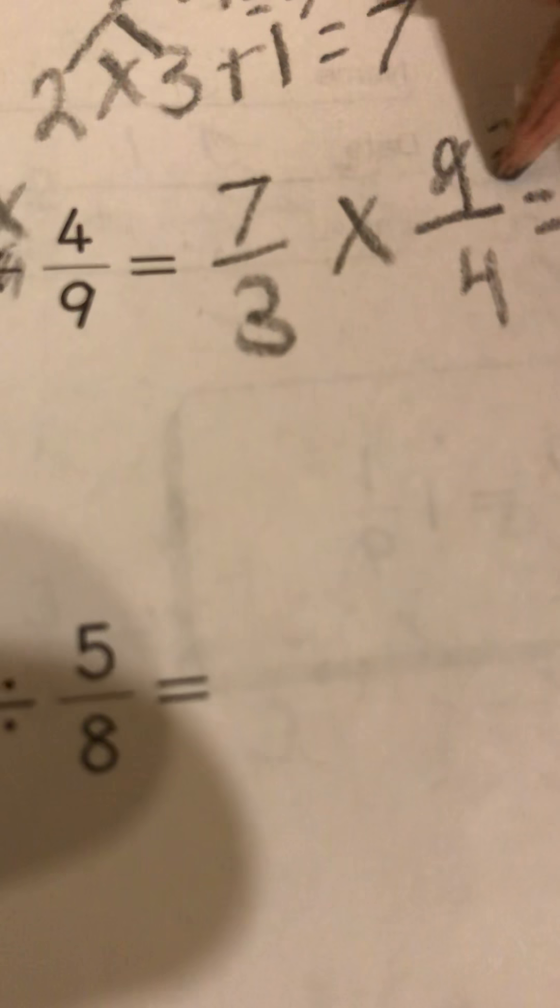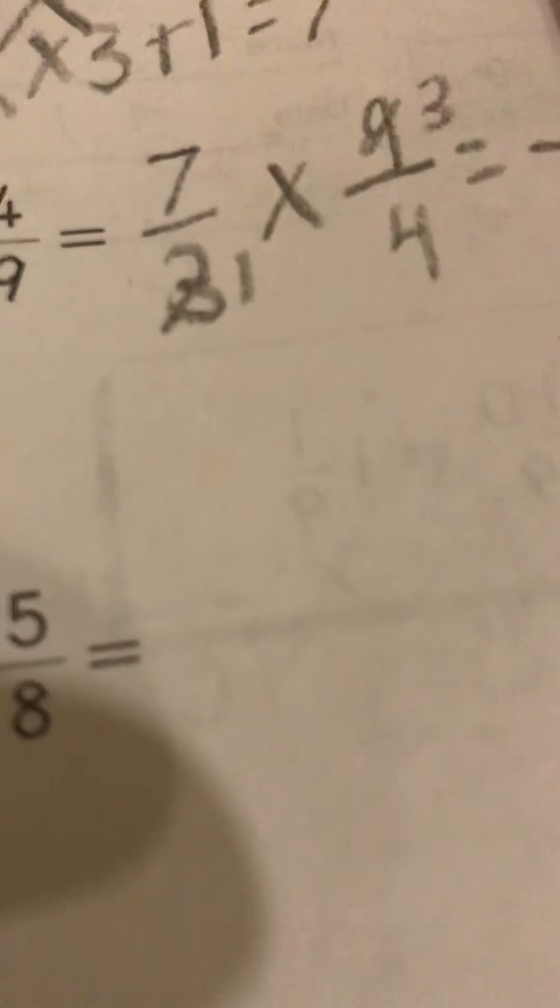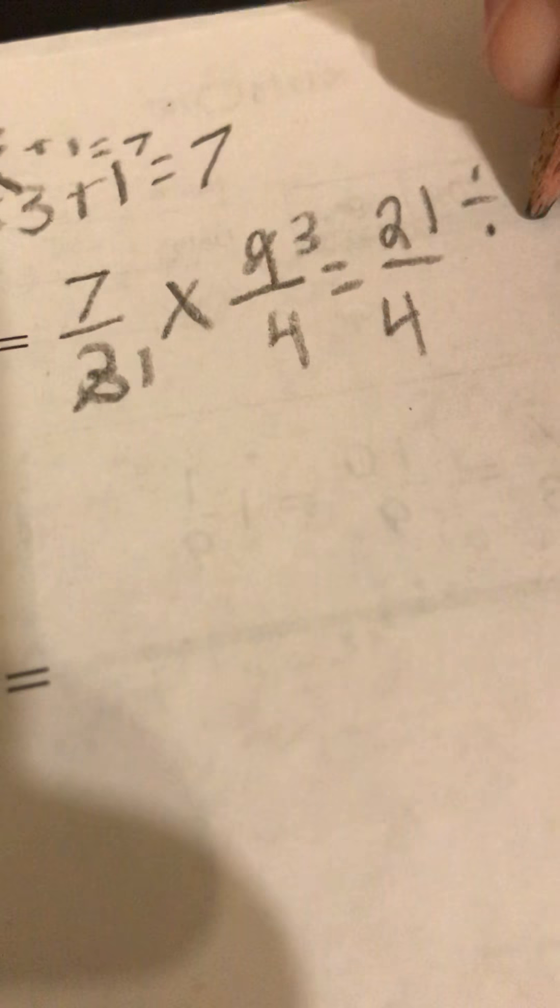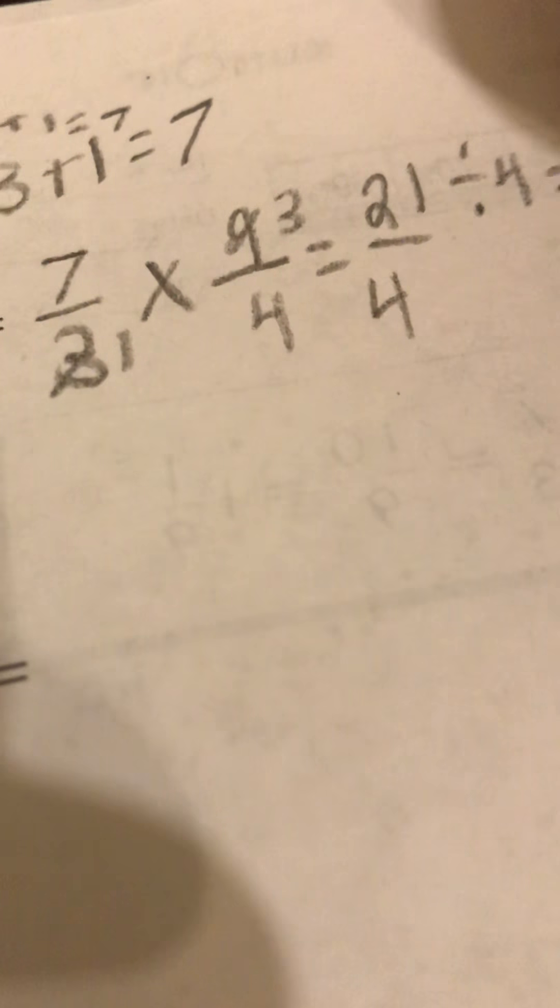So this reduces. I'll change this because three divides into nine three times and three divides into three one time. Seven times three is 21 over four, which is four times one equals four. So now 21 divided by four equals five with a remainder of one.